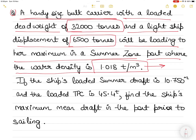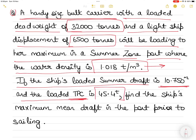The ship's loaded summer draft — that means when the ship is loaded up to maximum, to her summer draft — is 10.750 meters. The loaded TPC (tons per centimeter of immersion) is 45.4, meaning when you load 45.4 tons on the vessel, the ship immerses by one centimeter. You have to find the ship's maximum mean draft in the port prior to sailing.